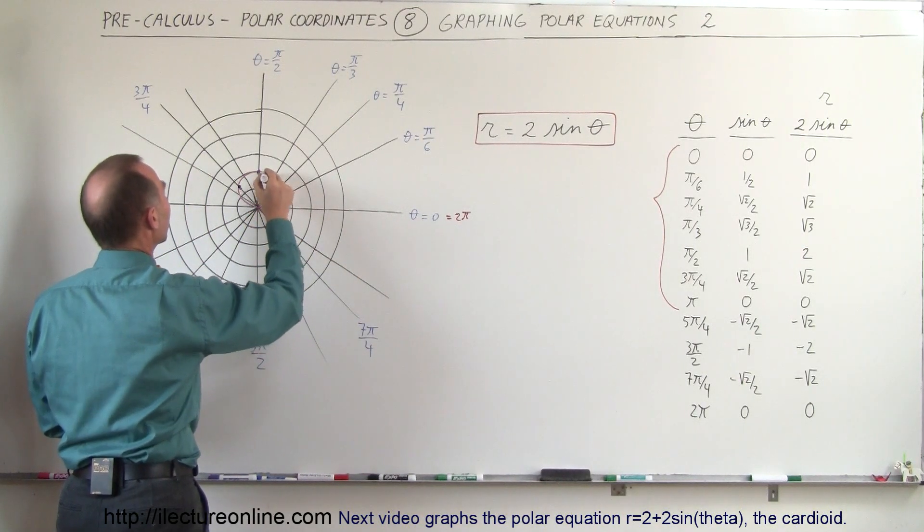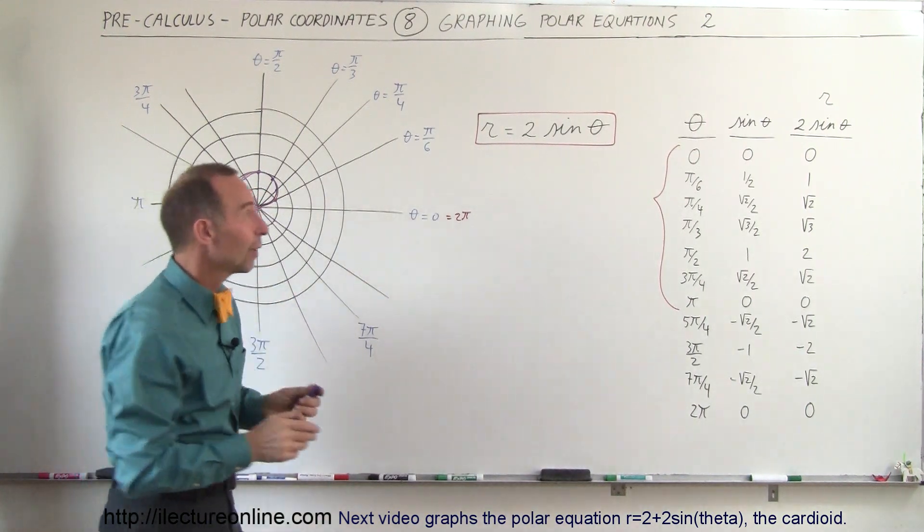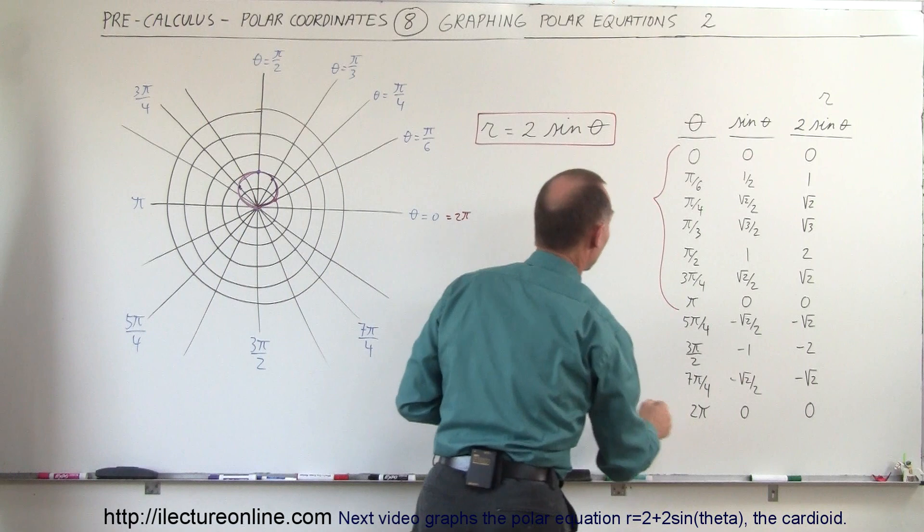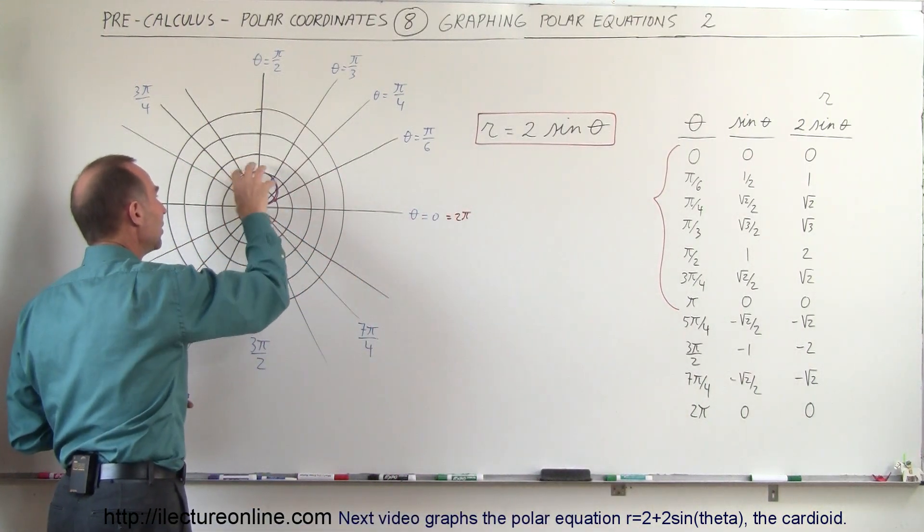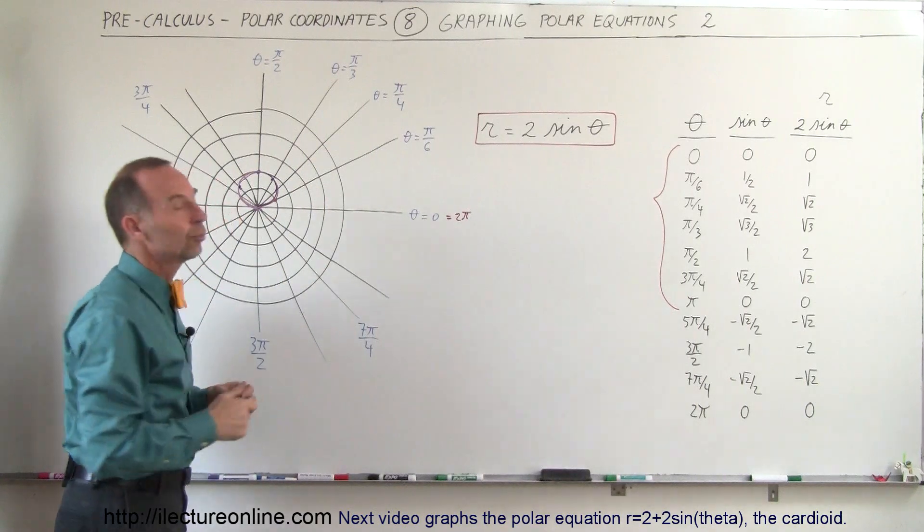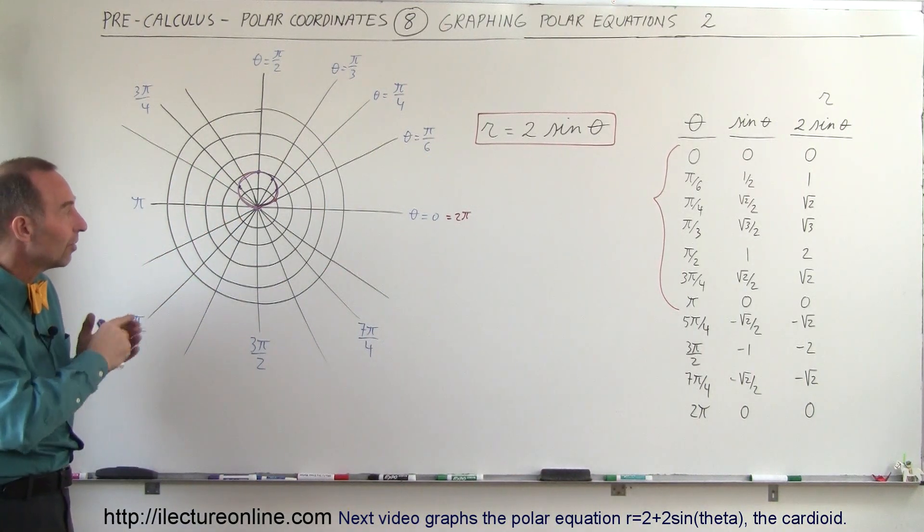Notice we come all the way around again. When we have values all the way from 0 to 2π, basically we go around the circle twice. That would then be the graph of r equals 2 sine theta. So even though we go around twice, we get the exact same coverage, the exact same circle.